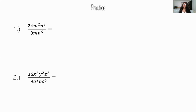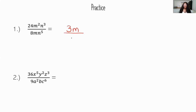Practice problem 1: 24m²n³ over 8mn⁵. Dividing 24 by 8 gives 3. For the m's: two m's in the numerator, one in the denominator — after canceling, one m remains in the numerator. For the n's: three n's in the numerator, five in the denominator — after canceling, two n's remain in the denominator. The answer is 3m over n squared.